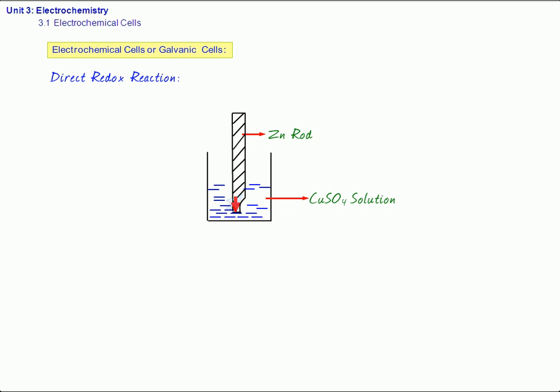Number one, the zinc rod loses its weight — the zinc rod gets dissolved. Number two, the color of copper sulfate solution fades. Copper sulfate solution is an intense blue colored solution, so when you put the zinc rod, the color fades. Then copper is deposited, and most importantly, the temperature of the solution increases — this solution becomes very hot. This is an example of a direct redox reaction.